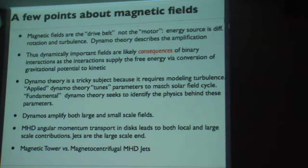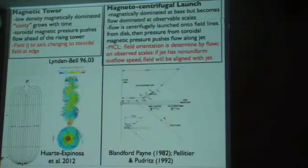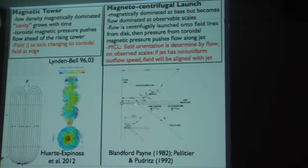Now, having said that, just one other point about the magnetic mediation. There are two classes of magnetic models actually. One is the magnetic tower that we've heard described, and the other is the magnetocentrifugal launch. They're actually different in the sense that the magnetic tower is a wound-up magnetic field that's amplified at the base. The footprints are both located at the base. The magnetic cavity rises up and the flow is basically magnetically dominated over very large distances. In the magnetocentrifugal launch, the flow is actually being launched from the disk itself.